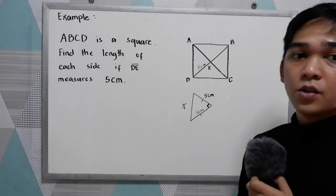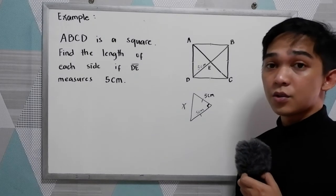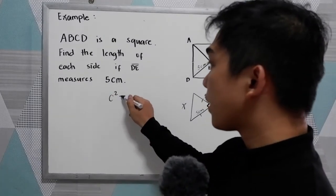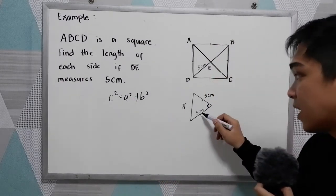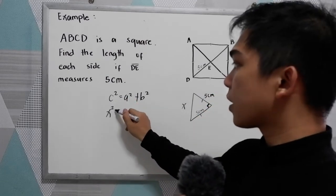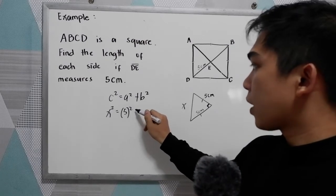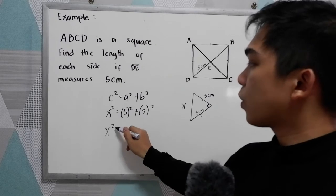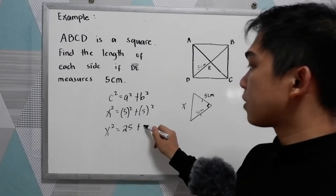So right triangle, we're going to use the Pythagorean theorem. So we have C squared is equal to A squared plus B squared. We have the given sides. So we're looking for the longest side. Let's say x squared is equal to our given 5 squared plus 5 squared. Now we have x squared is equal to 25 plus 25.